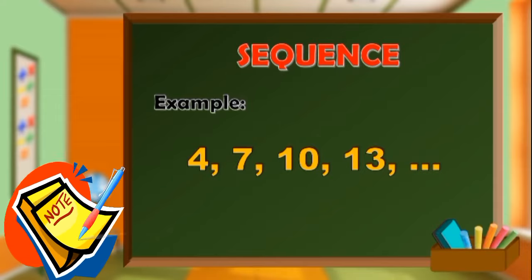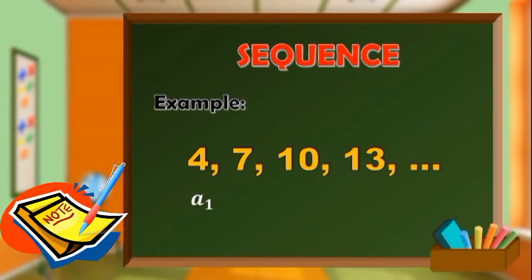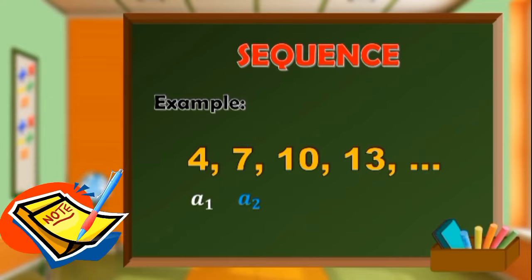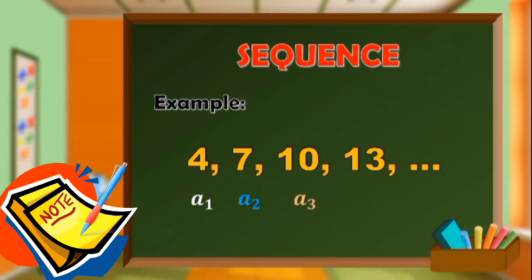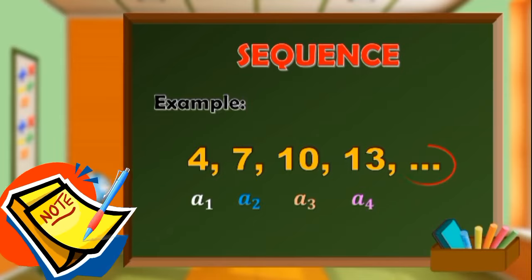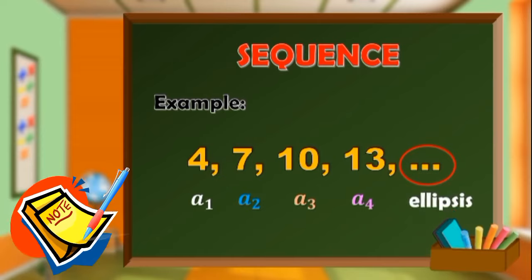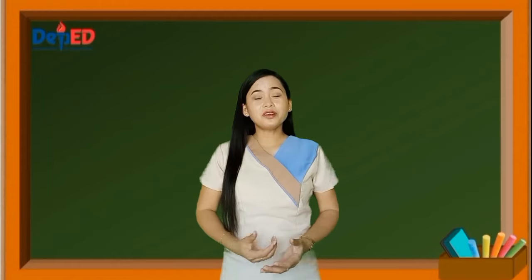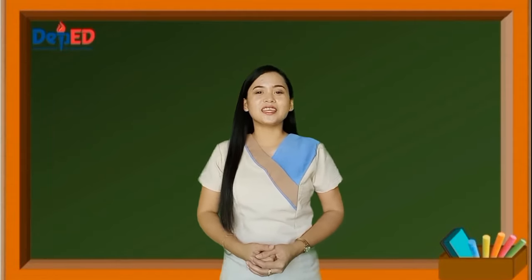4 here is called the first term, represented by a sub 1. 7 is the second term, or a sub 2. 10 is the third term, or a sub 3. And finally, 13 is the fourth term, or a sub 4. The three dots after 13 is called ellipsis, which means the sequence continues infinitely with the same pattern.